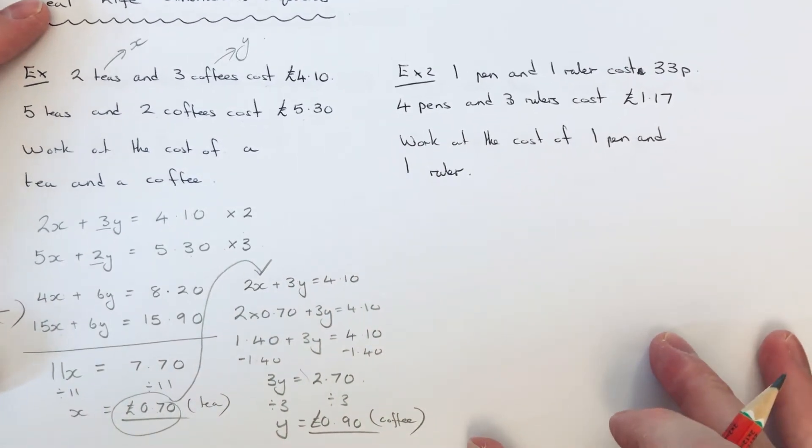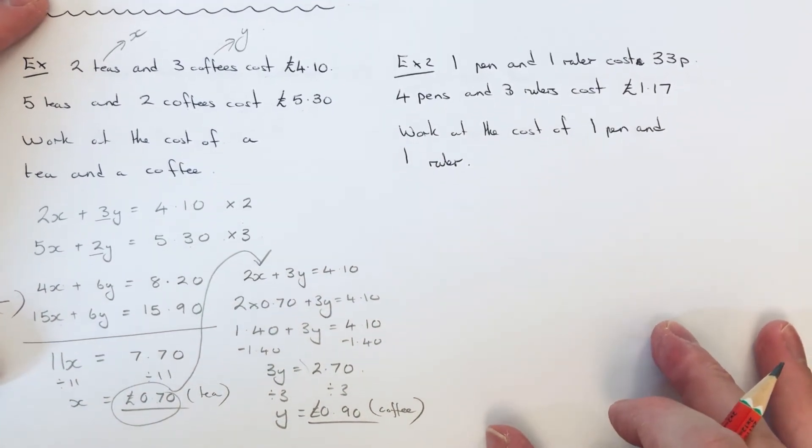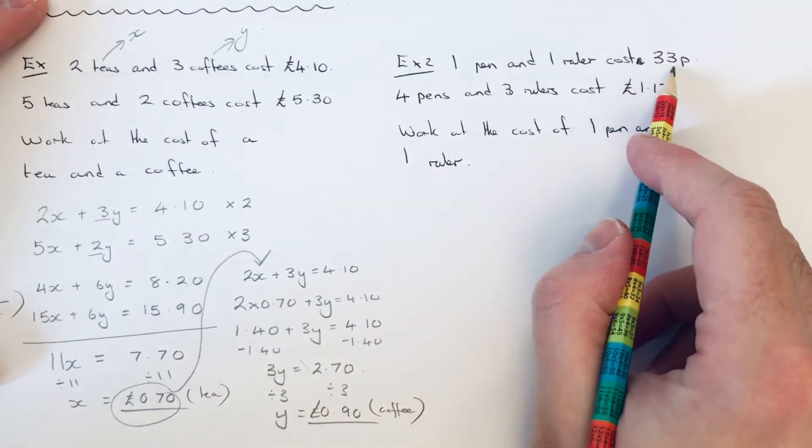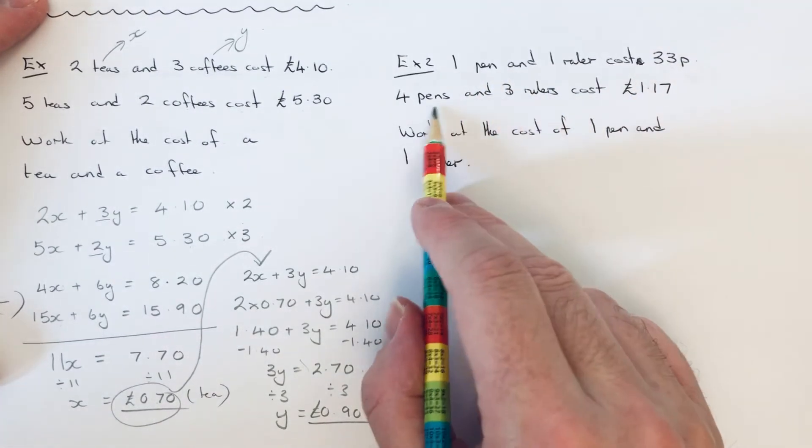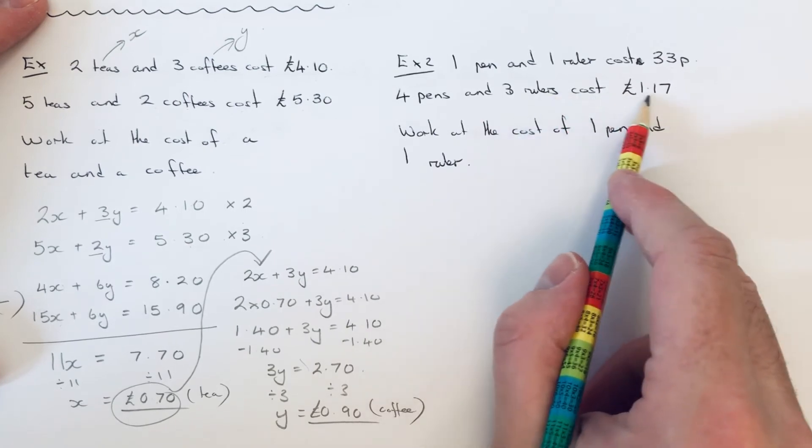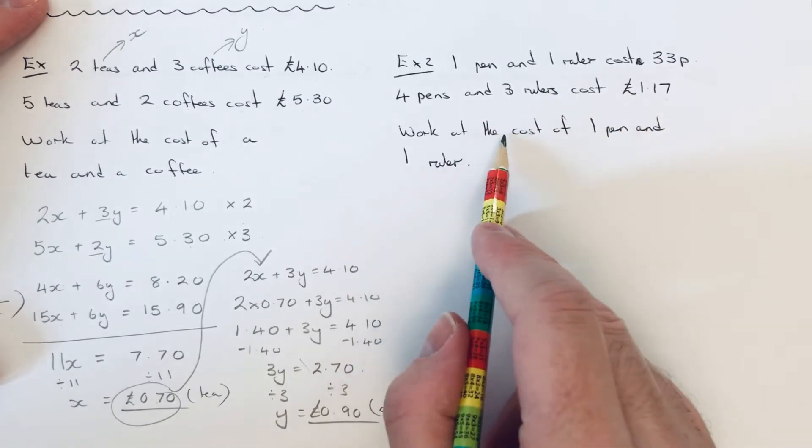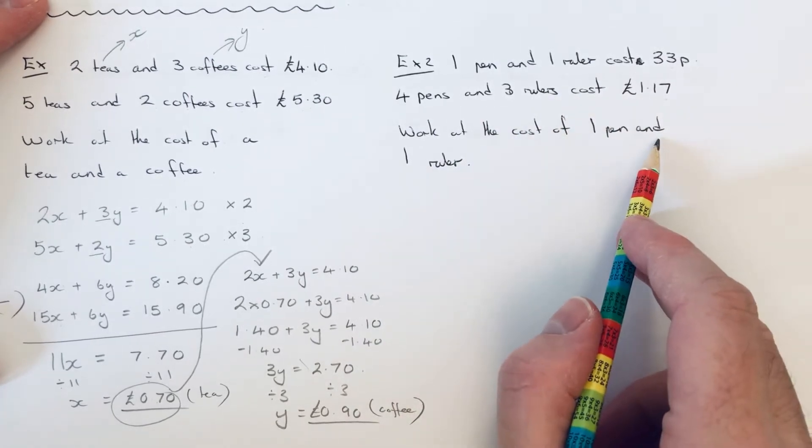So let's move on to example 2 then. So we've got 1 pen and 1 ruler cost 33p. 4 pens and 3 rulers cost £1.17. Work out the cost of 1 pen and 1 ruler.